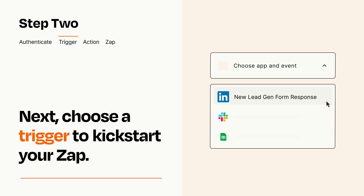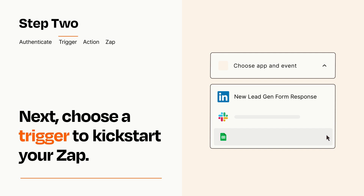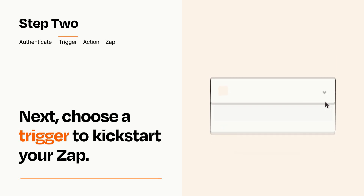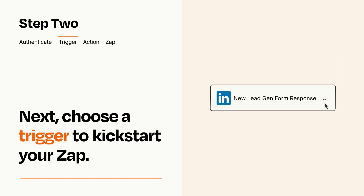Now let's set up your trigger, which is the event that starts your Zap. Pick the trigger event that you want from the list. When you set up this step, your Zap will pull in test data from your trigger app that you'll see later when setting up your action app.